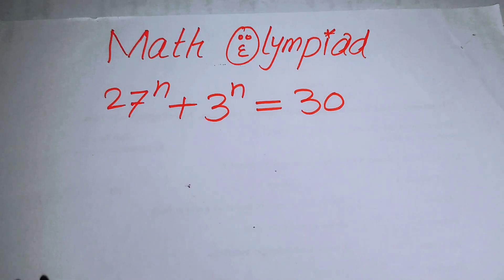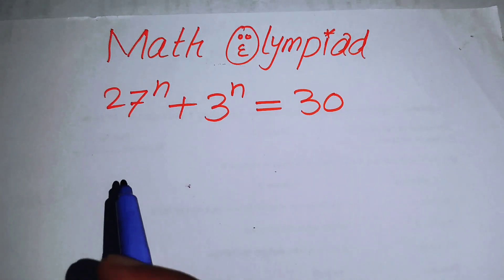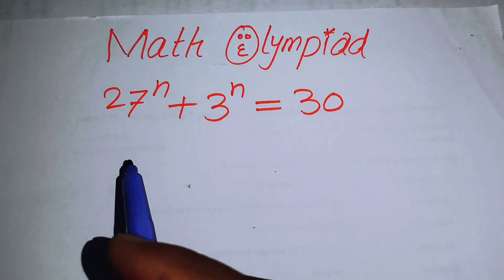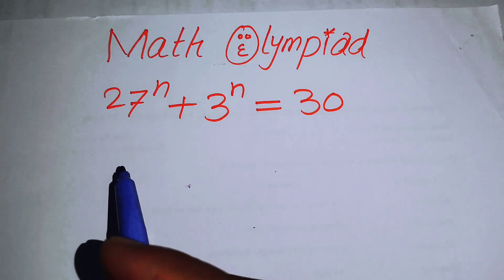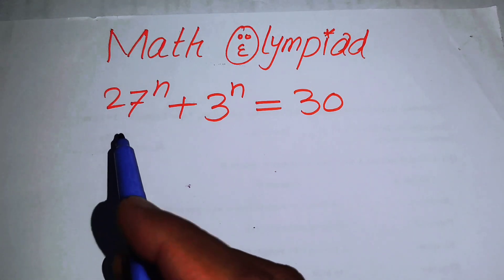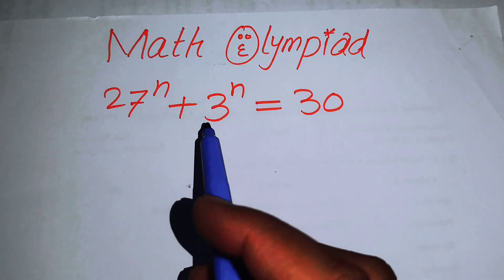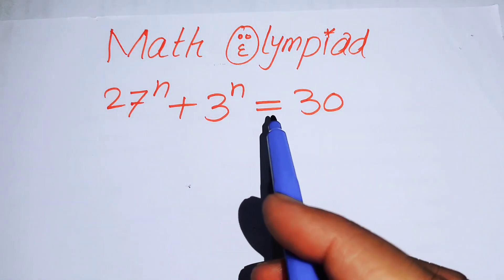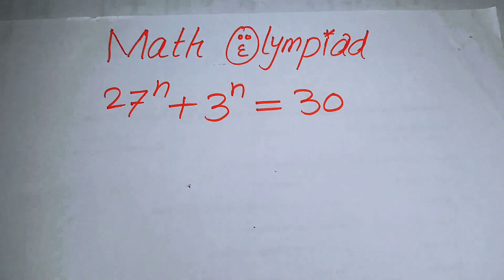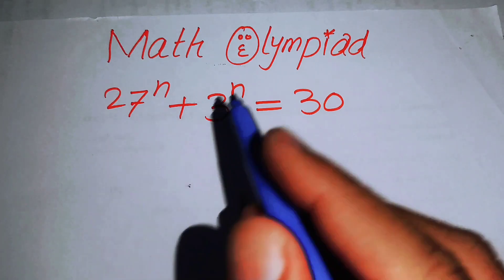Hello everyone, welcome back to the Map of Mathematics. In this video we are going to solve this nice exponential equation problem. We have 27 to the power of n plus 3 to the power of n is equal to 30, and we will solve this problem for the real values of n.